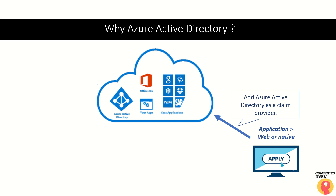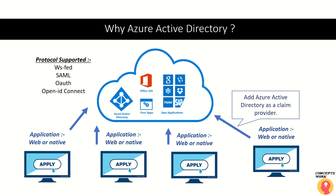For an enterprise developer maintaining thousands of identities and multiple applications, you simply add Azure Active Directory as a claim provider for all your applications. Instead of maintaining four separate databases, there is one single identity provider serving all applications. Users can themselves update details — address, contact information, profile picture — directly in Azure Active Directory, and all your applications can query those claims for their own tasks.